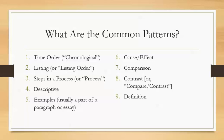What are the nine common patterns of organization? First, we have time order or chronological. Number two, listing or listing order. Number three, steps in a process — some people just call it process. Number four, descriptive. Number five, examples, which are usually supporting details in a paragraph or essay. Number six, cause and effect. Number seven, comparison. Number eight, contrast — and seven and eight are often combined as compare and contrast. Number nine, definition.